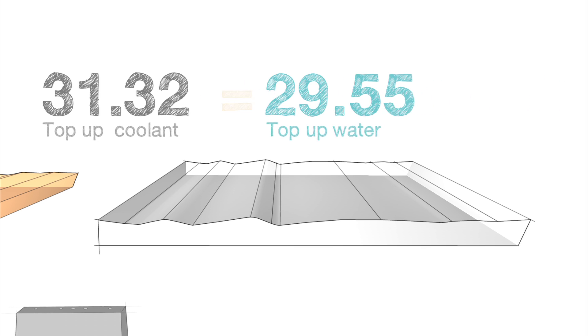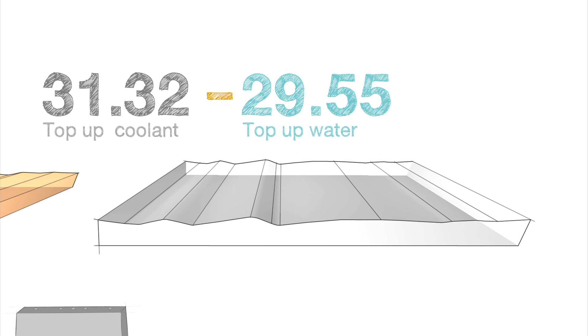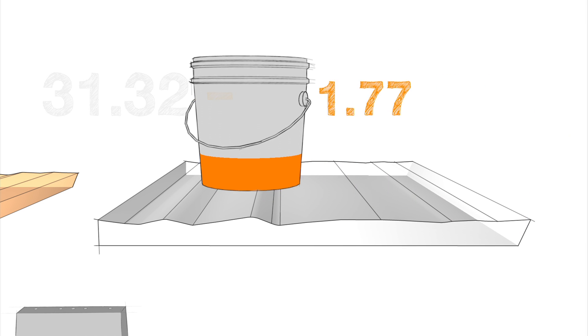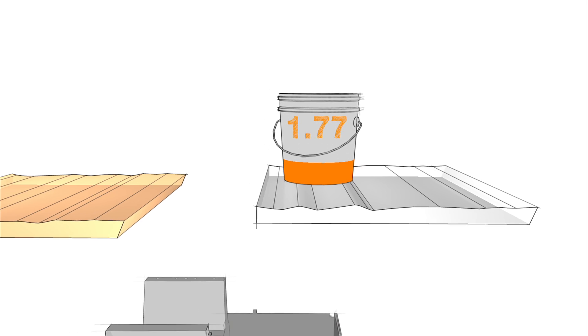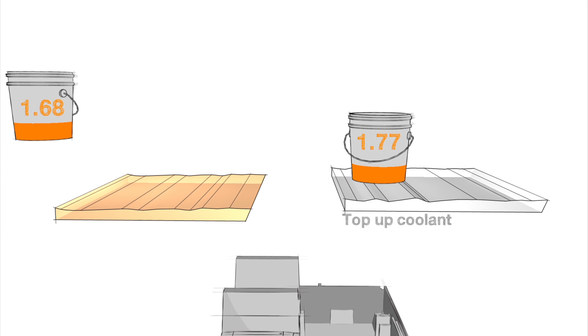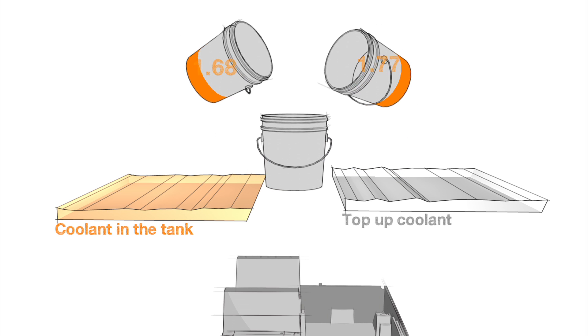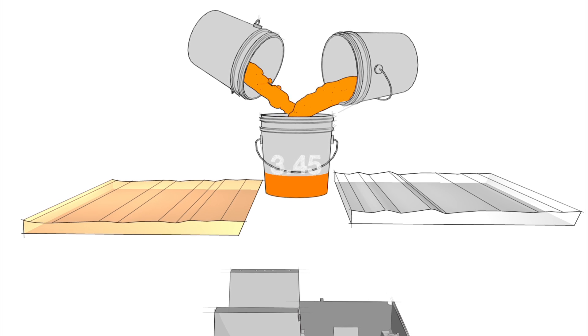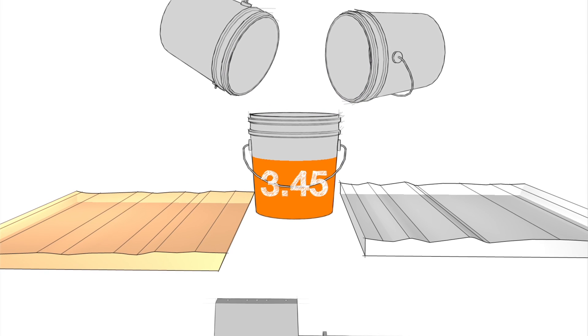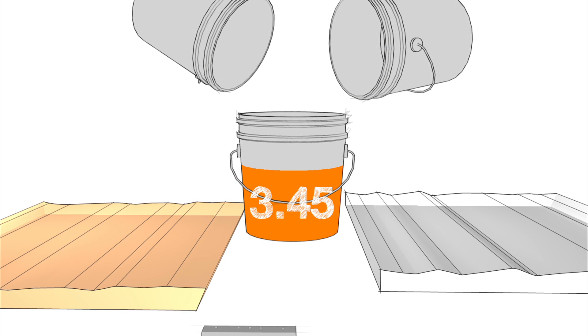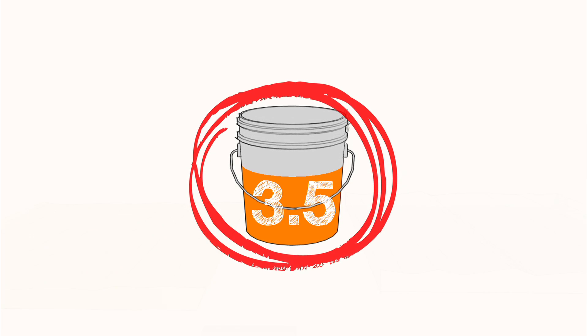Finally, we subtract 29.55 from 31.32 to find the 1.77 gallons of concentrate we needed. Now we know we need 1.77 gallons of concentrate for our top-up coolant and 1.68 gallons of concentrate to fix the coolant in the tank. So we add 1.68 to 1.77 to get 3.45 gallons of concentrate total. We round this number up to 3.5 gallons.